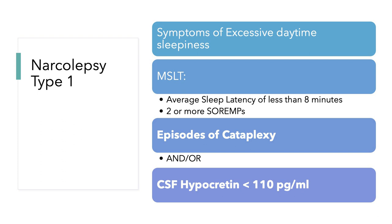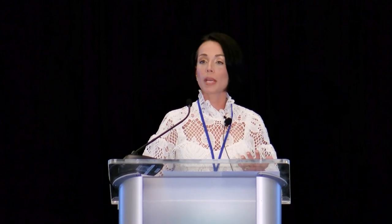Narcolepsy type 1 presents with excessive daytime sleepiness, typically diagnosed with an MSLT where average sleep latency is less than eight minutes and you have two sleep onset REM periods across four to five nap opportunities. There will typically be episodes of cataplexy, or if absent, a lumbar puncture showing CSF hypocretin less than 110 picograms per ml confirms the diagnosis.